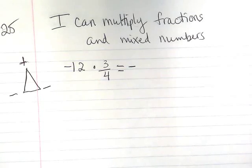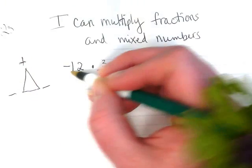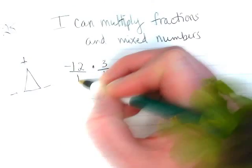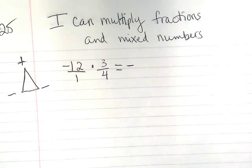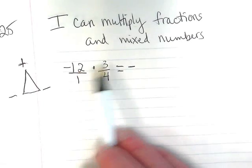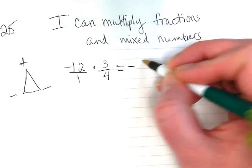We multiply numerators and denominators. There's an invisible one with that negative 12, and it's underneath it. Do you guys remember that math fact that all whole numbers are really a fraction over 1? So now I can take 12 times 3, and I get 36.